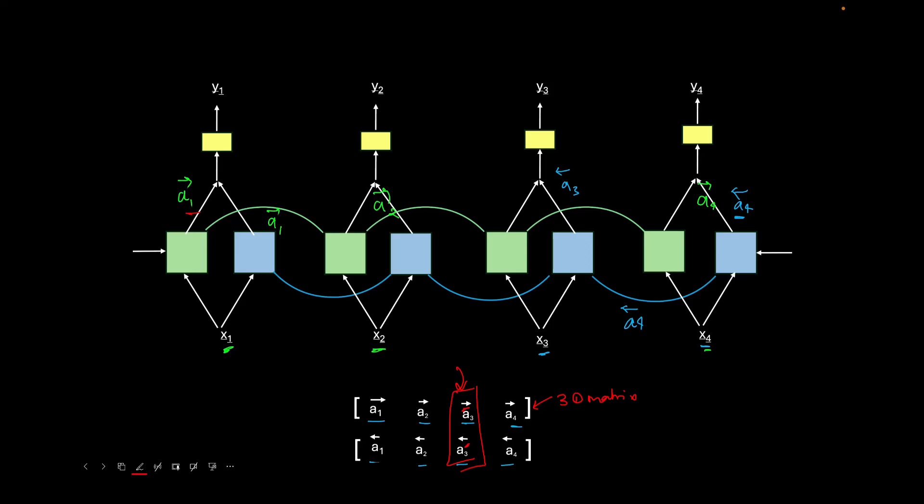And the back propagation for this bidirectional RNN will move in two directions. For simple RNN you know that the back propagation was moving from time t equal to last time step t till t equal to 1.